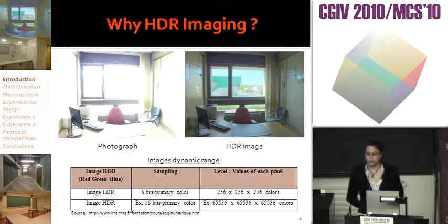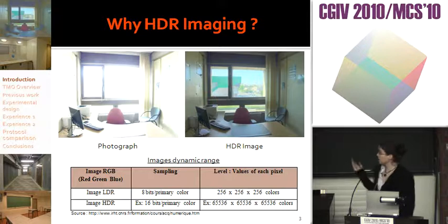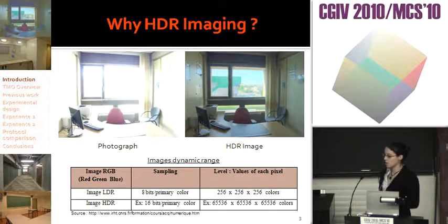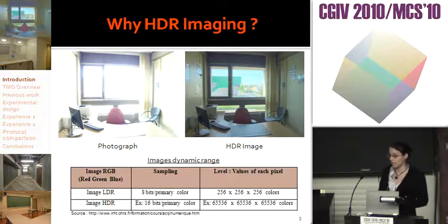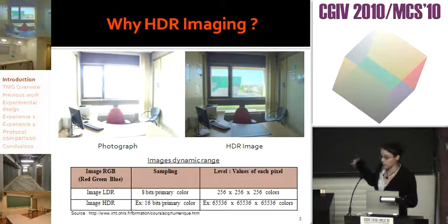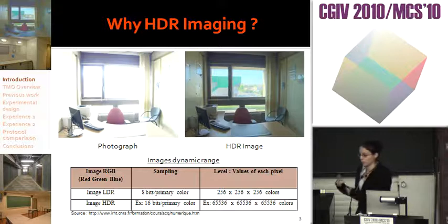So first, in introduction: why high dynamic range imaging? On the left side, you can see a low dynamic range photograph. Each pixel can take 256 different values for each color — red, green, and blue. As you can see, this photograph is overexposed compared to what we observe in reality. On the contrary, with a high dynamic range image, each pixel can take more different values, and so we can get more information about the luminance of the scene, and the image is closest to reality.